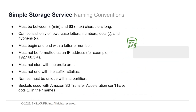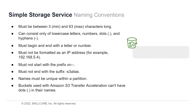When naming your S3 bucket, certain naming conventions must be followed or your bucket may run into problems. First, your bucket name must be between 3 and 63 characters long. Second, the name can only consist of lowercase letters, numbers, dots, and hyphens — so a name like '#myS3hat' won't work. Third, your name must begin and end with a letter or a number. Fourth, your S3 bucket must not be formatted as an IP address, such as 192.168.3.4.